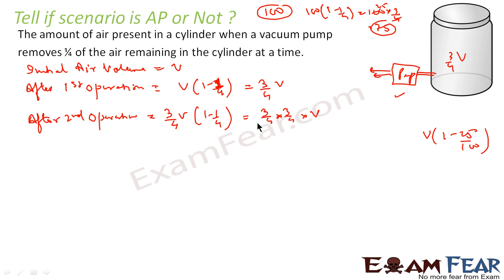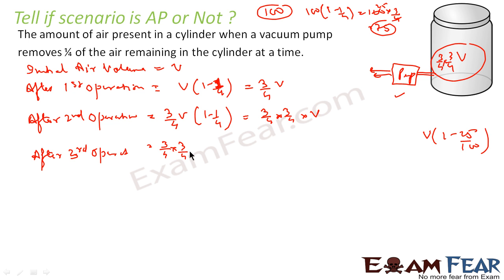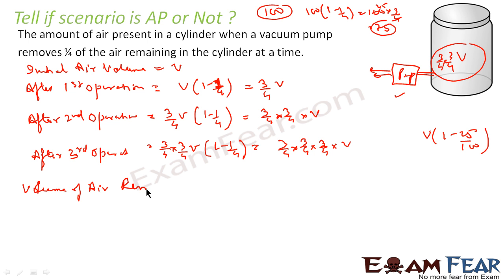After the third operation, the volume is (3/4)² V. The pump removes 1/4th again, so the volume becomes (3/4)³ into V. The series of air volumes remaining is: V, 3/4 V, 9/16 V, 27/64 V, and so on.